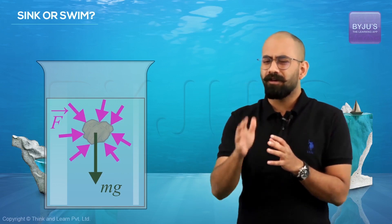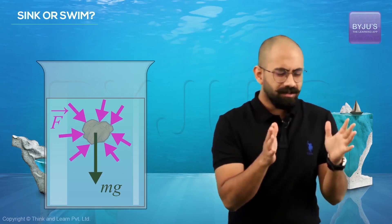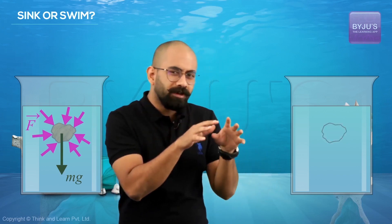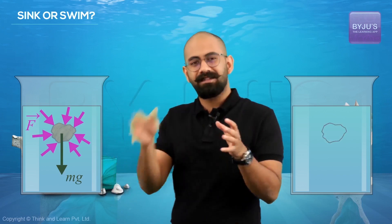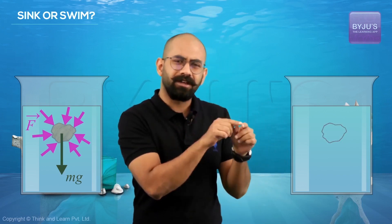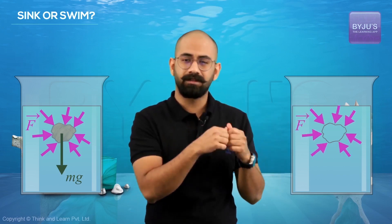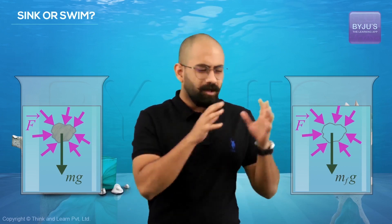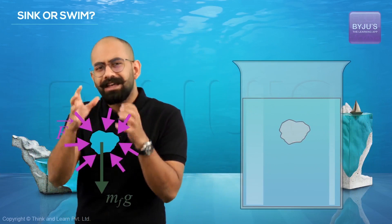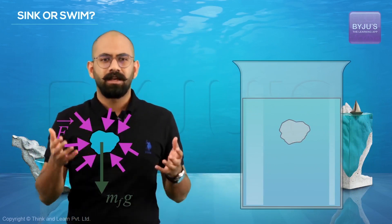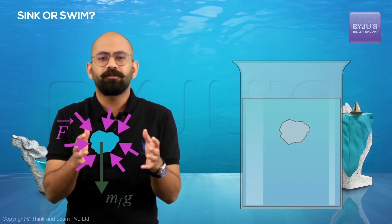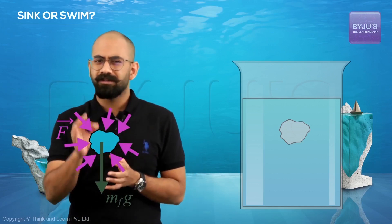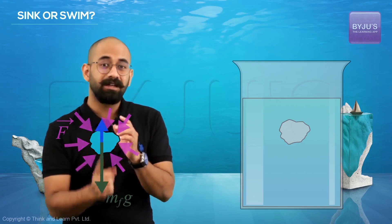What will be the resultant of all these contact forces? To answer that, consider another identical container with the same fluid up to the same level, and consider a volume of fluid that has exactly the same shape as the object. Draw the FBD for this case — there will be contact forces from the fluid, and the force of gravity MfG, where Mf is the mass of this volume of fluid. Now remove that body of fluid — because it's not moving, it's in equilibrium, so the net force on it has to be zero. Since gravity applies a force MfG downward, the resultant of the contact forces must have a magnitude of MfG in the upward direction.